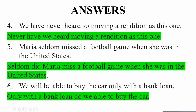Question six: 'We will be able to buy the car only with a bank loan.' Bring out 'only with a bank loan,' followed by auxiliary 'will.' 'We' is the subject. Answer: 'Only with a bank loan will we be able to buy the car.'